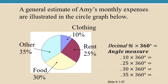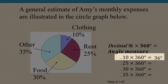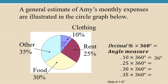We're going to take the decimal form of each percent and multiply it by 360 to determine the size of the angle that has to be drawn to represent each category. For the clothing category, 10% is written as 0.10. Multiplied by 360 gives you 36 degrees, so the central angle swept out by the clothing category is 36 degrees.